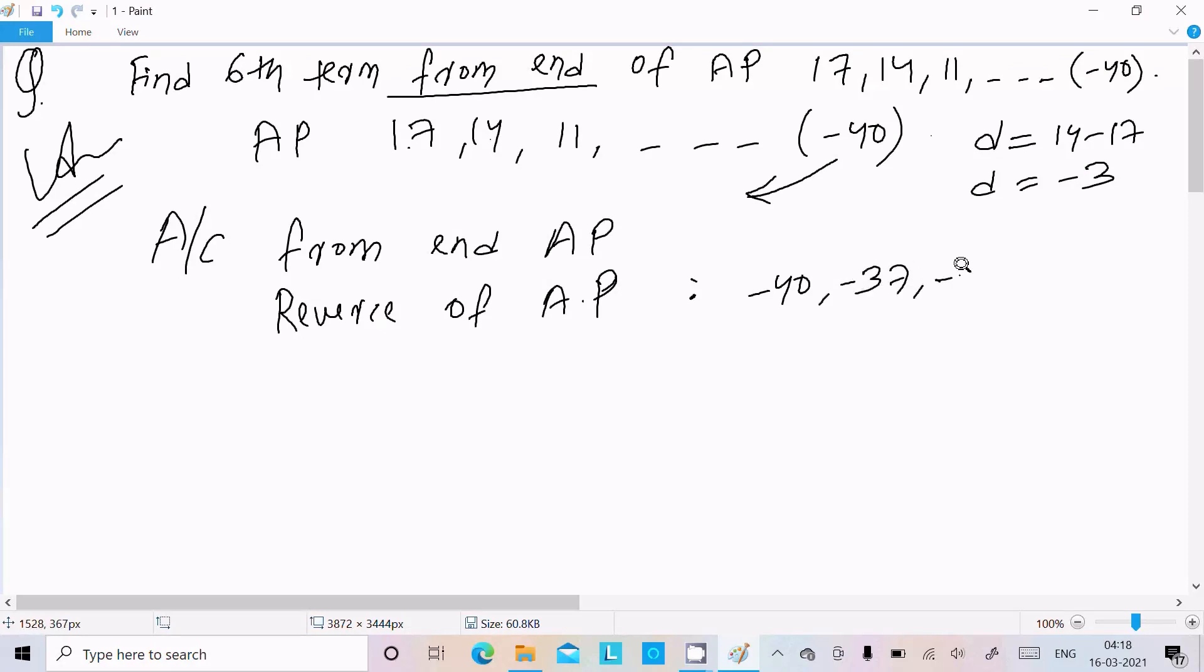So here next is minus 37, next is minus 34, this will continue 11, 14, and 17. So from the end of the AP, I did the reverse of the AP. So here minus 40, minus 37, minus 34, and 11, 14, 17. So you need to calculate the difference.